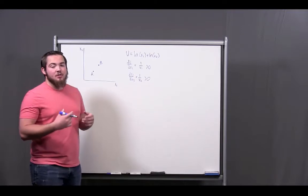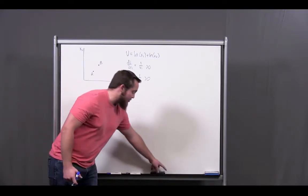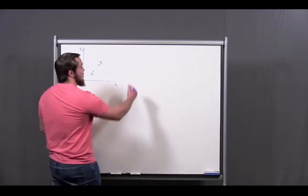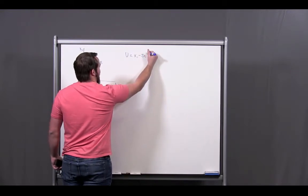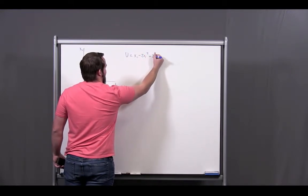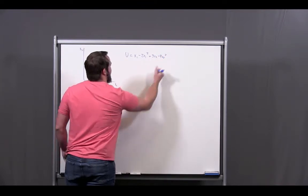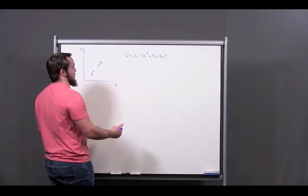This won't always be the case. Sometimes, we're going to have functions that don't exhibit monotonicity. For example, we're going to look at another function. This function is going to be a polynomial. So, it's u equals x1 minus 2x1 squared plus 3x2 minus 4x2 squared.